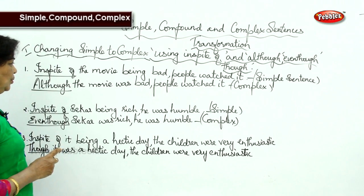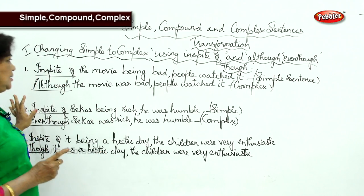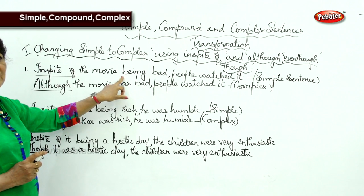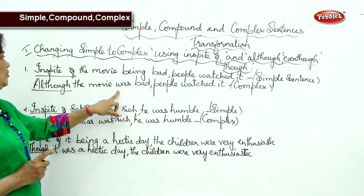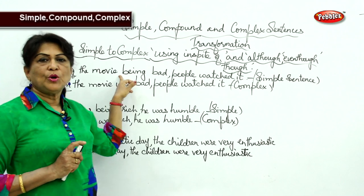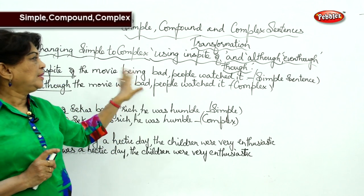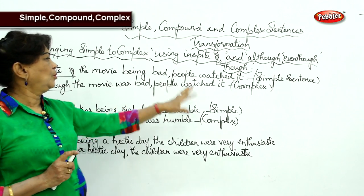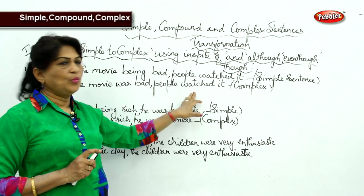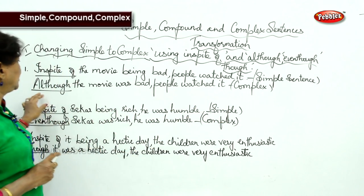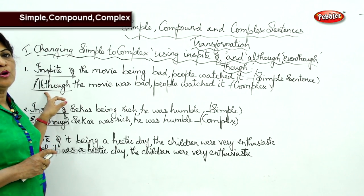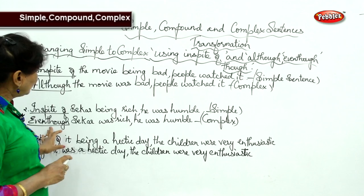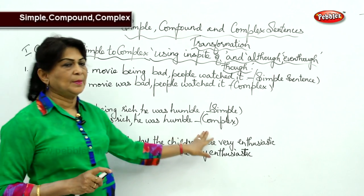Here, 'although,' 'even though,' or 'though' introduces the dependent clause: 'the movie was bad, people watched it.' In the simple sentence we use the -ing form of the verb (gerund), but in the complex sentence it becomes an ordinary finite verb. In 'in spite of the movie being bad,' we have only one finite verb. Whereas in 'although the movie was bad, people watched it,' 'was' is one verb and 'watched' is another — that is why it is complex, joined by a subordinate conjunction. The same applies: 'Even though Shaker was rich, he was humble' is complex, and 'though it was a hectic day, the children were very enthusiastic' is complex.